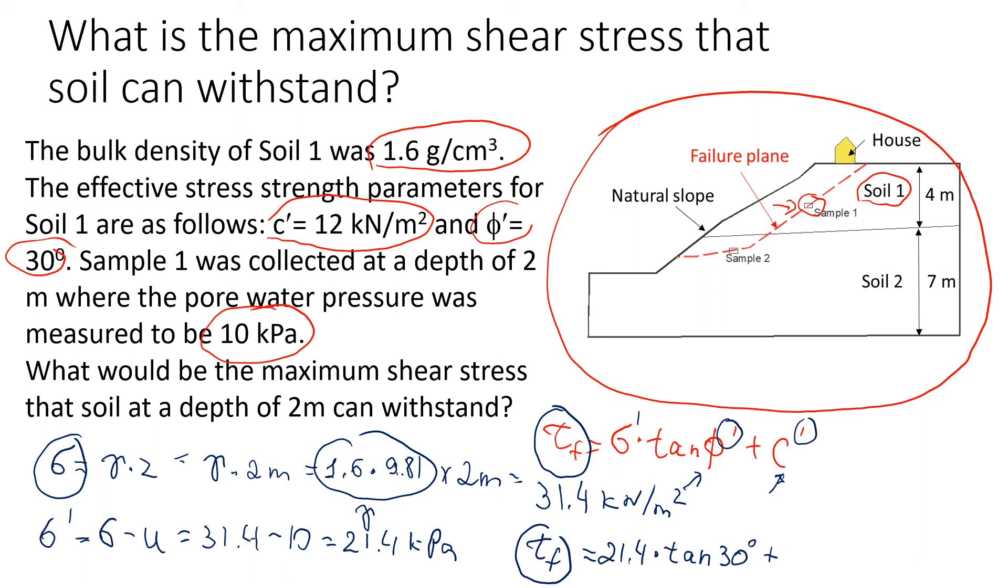And plus the effective cohesion which is 12. Tangent of 30 degrees equals 0.577, so in this case we're going to have 12.3 plus 12, which equals 24.3 kilonewtons per square meters. So this is the maximum shear stress that soil at this level, 2 meters below the ground, can withstand.